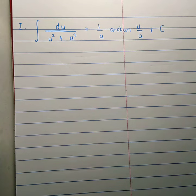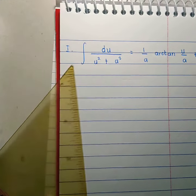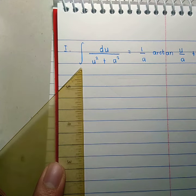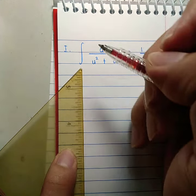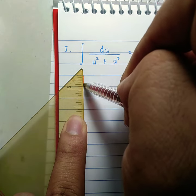The first formula involves the integral of du over u squared plus a squared. I'm going to derive the formula from trigonometric substitution, so I'm going to draw a right triangle.